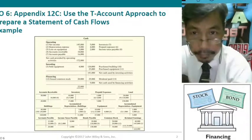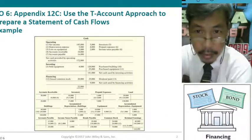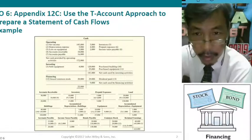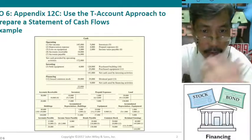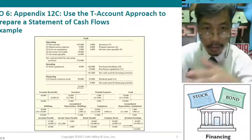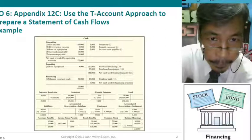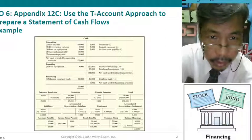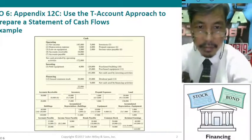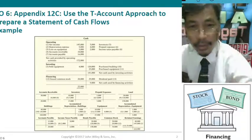For the direct method and indirect method, they are the same with respect to investing and financing activities. They will only be different with respect to the operating activities. But here in the cash T-account, we can use the direct method approach. However, we have net income, depreciation expense, and loss on equipment — so this is actually the indirect method. Although we are in the cash T-account, we can use it for either direct or indirect method.